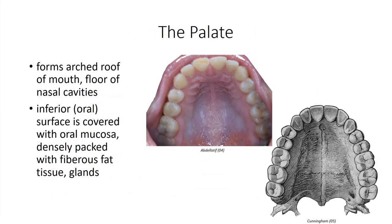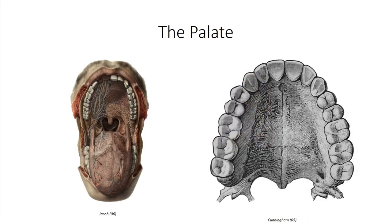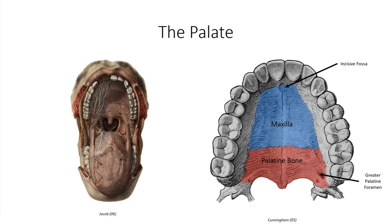The palate forms the roof of the oral cavity. The internal lining of the palate is formed by a mucosal covering of a dense mixture of fat and glandular tissue embedded in a fibrous matrix. The palate can be divided into two distinct regions. Anteriorly, the hard palate is made up of a bony plate consisting of the maxilla and palatine bones. Just posterior to the central incisors is the incisive fossa, which accommodates the nasopalatine nerve branches. Posteriorly, the greater palatine foramen lies medial to the third molar and accommodates passage of the greater palatine artery and nerve. Just posterior to that is the lesser palatine foramen, which accommodates the lesser palatine neurovascular bundle.